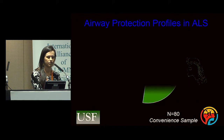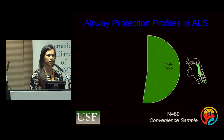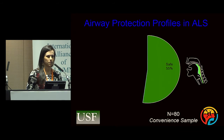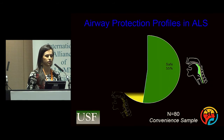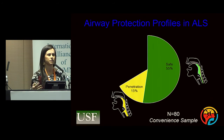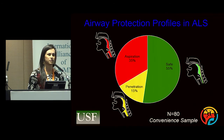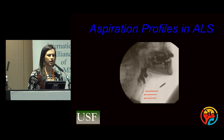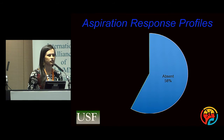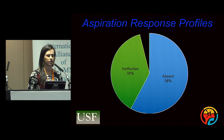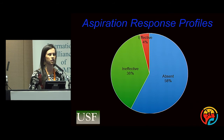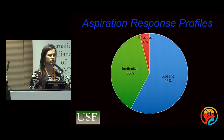What about airway protection profiles in ALS? At our center we run clinical trials and do modified barium swallow studies. With an N of 80 so far, 55% of patients adequately protect their airways during swallowing, 15% penetrate — meaning material enters at or above the level of the vocal folds — and the remaining 35% aspirate. Of those who aspirate, surprisingly 58% have no cough reflex, 38% cough but ineffectively, and only 4% have an effective cough reflex. This has driven us to look at physiologic-based treatment strategies.